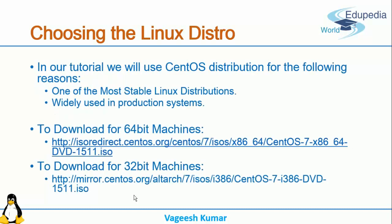In this particular tutorial we will be using the CentOS distribution. One reason is that CentOS is one of the most stable Linux distributions available and it is widely used in production systems throughout the world. These distributions are certified in a sense that they can work under high load, keep running for years without rebooting, and problems do not occur frequently. CentOS is one such distribution — very stable and widely used in production systems.